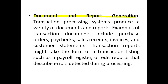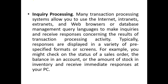Document and report generation: transaction processing systems produce a variety of documents and reports, including purchase orders, paychecks, sales receipts, invoices and customer statements. Other reports may include transaction listings such as journal registers or edit reports describing errors detected during processing. In inquiry processing, many TPS allow use of the internet, intranets, extranets and web browsers or database management query language to make inquiries about transaction processing activity. For example, checking the status of a sales order, the balance in an account, or the amount of stock in inventory.